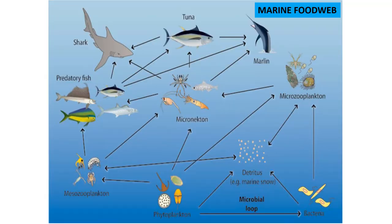The marine food web is one of the most complex food webs with very strong relationships among all groups. The basic producers in the marine system are phytoplankton and algae. Phytoplankton is eaten by different zooplankton — micro-zooplankton and meso-zooplankton — which are basically eaten by micro-nekton. Plankton cannot swim, while nekton can swim. The micro-nekton and zooplankton are eaten by small fish, small fish by medium fish, and medium fish by the top predators — sharks, tuna, and blue marlin.